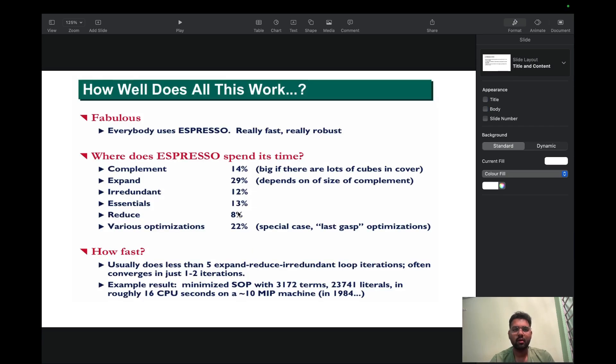Now how well does this Espresso algorithm work? It is really fast and really robust. It spends 14% of time to expand, 29% of time for complement, 12% for irredundant, 13% for essentials, 8% for reduce, and 22% for various optimizations to 100%. Usually it takes less than five expand-reduce-irredundant loop iterations, often converging in just one or two iterations.